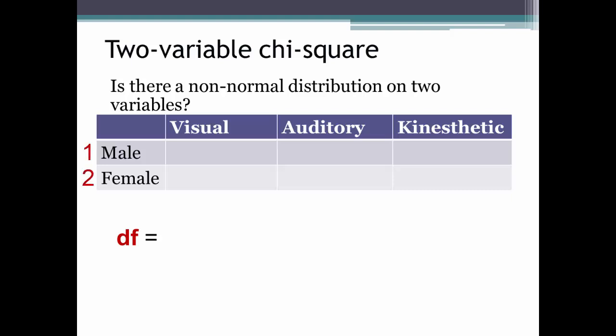But since we now have two rows of data, we have a different formula. Now we take the number of rows, we have 2, so 2 minus 1 is 1. Then we turn to the number of columns, which is 3, as we have columns for visual, auditory, and kinesthetic.